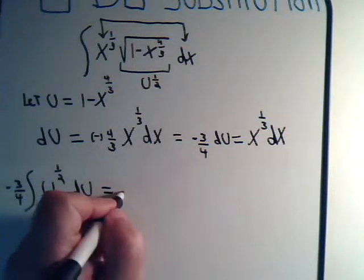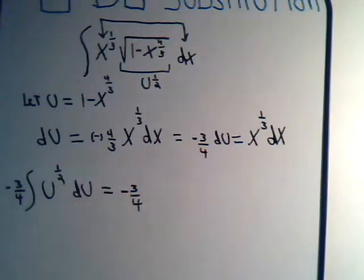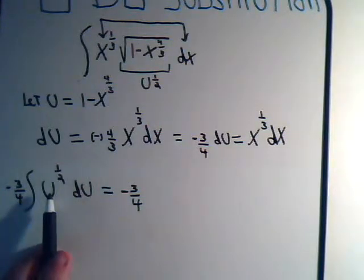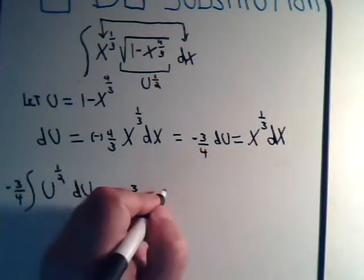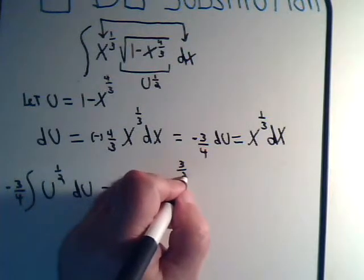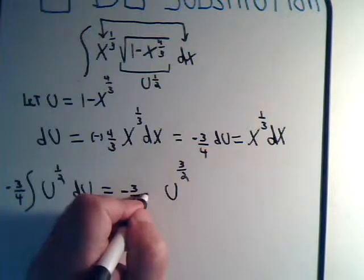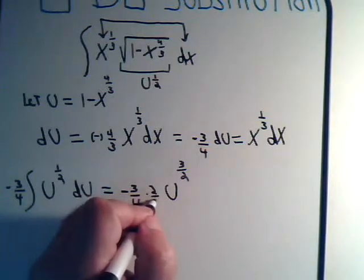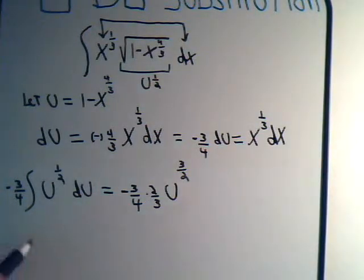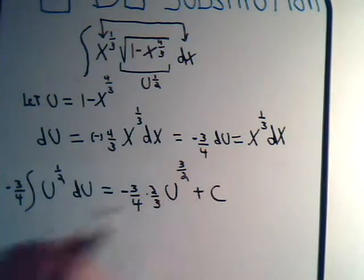We have u to the 1/2 plus 1, let's see, that will give us u to the 3/2. And don't forget, we have to divide by this exponent, or we would multiply by 2/3. And there's no limits here, so we'll also have an arbitrary constant of integration.